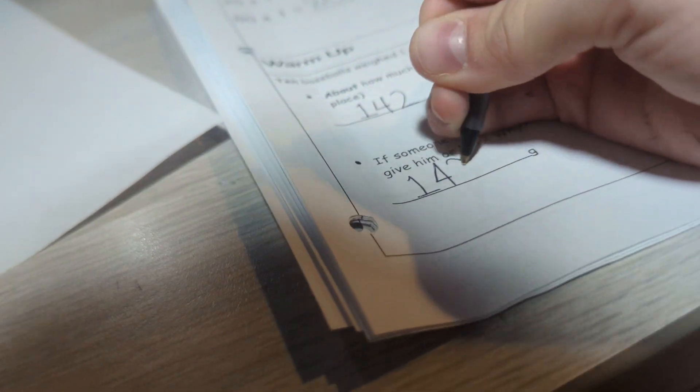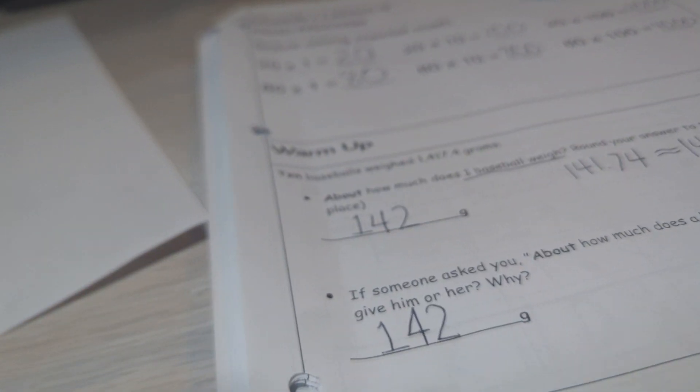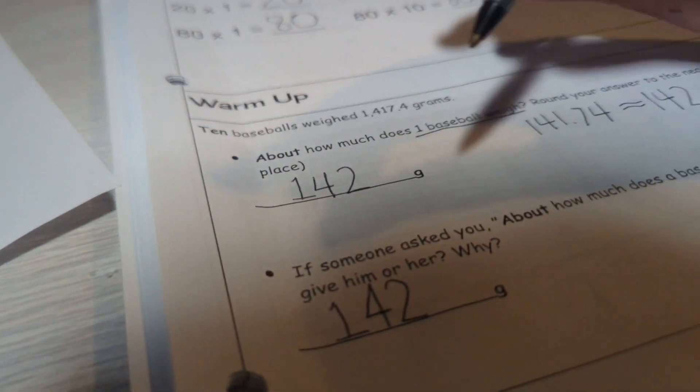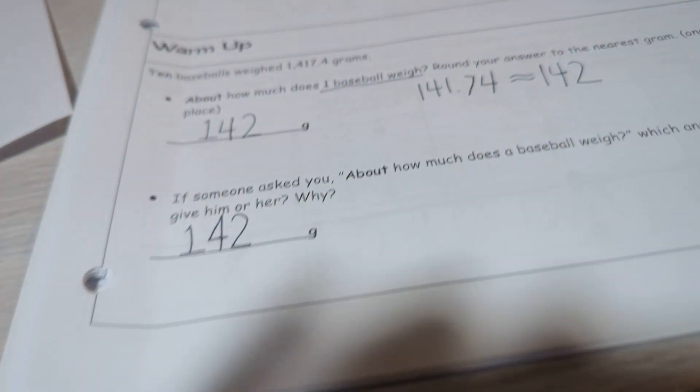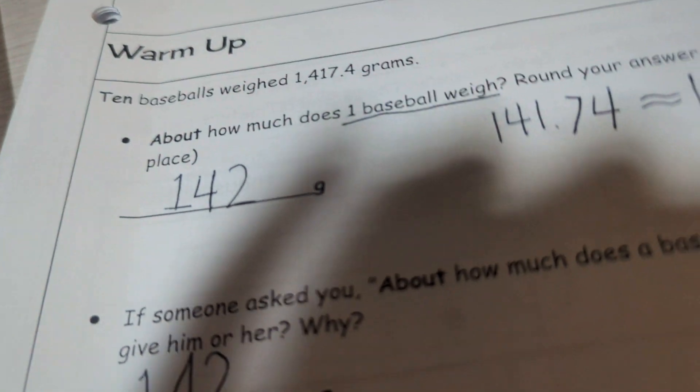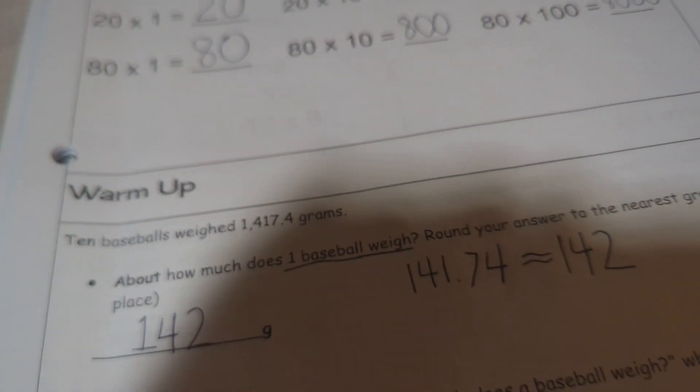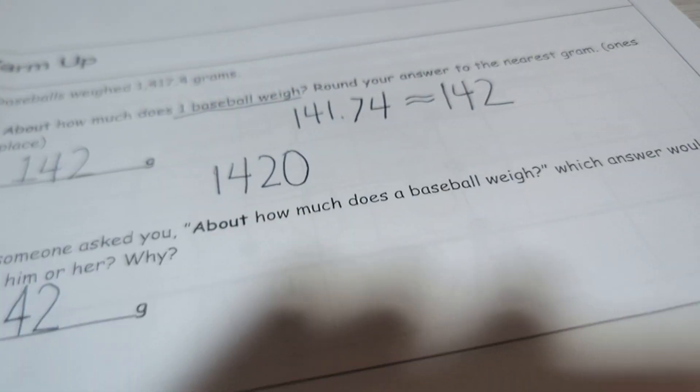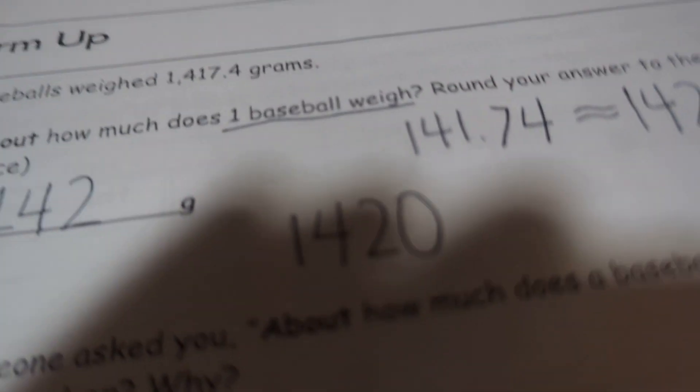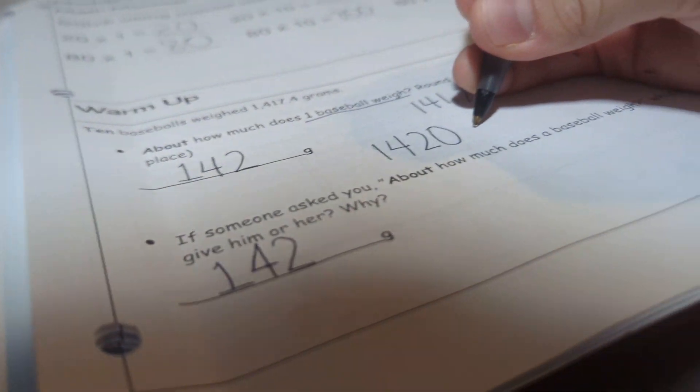So a baseball would weigh 142 grams, and yeah it's really cool because each baseball weighs 142 grams. But if you multiply by 10 you would get 1420, so is 1420 close to 1417.4? Yes, pretty close.